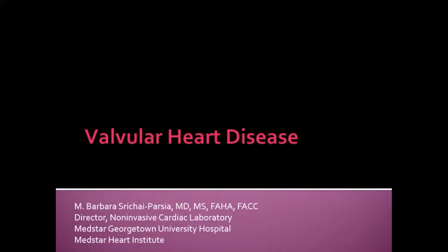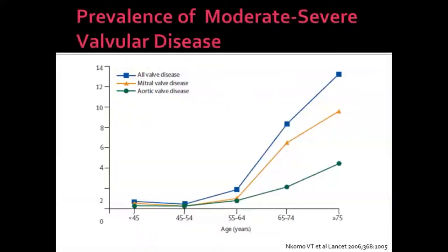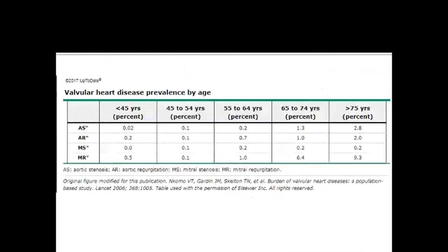Today we're discussing valvular heart disease. Looking at prevalence, we're most concerned when disease is moderate to severe, as it may cause symptoms or require therapy and intervention. Mitral valve disease is actually more common than aortic valve disease as we age. In patients over 75, 9% have significant mitral regurgitation and almost 3% have significant aortic stenosis.